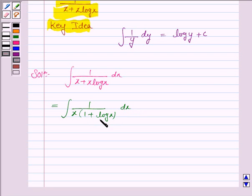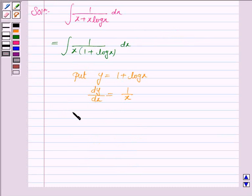Now here we see that the derivative of 1 plus log x is 1 upon x. So we put y is equal to 1 plus log x. Now we differentiate this with respect to x. So dy by dx is equal to 1 upon x.